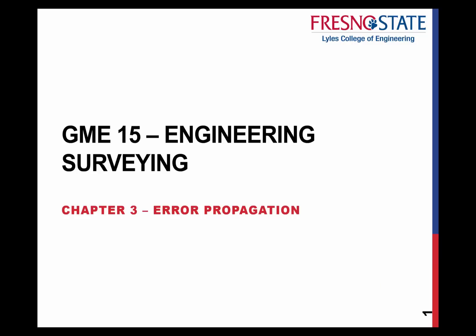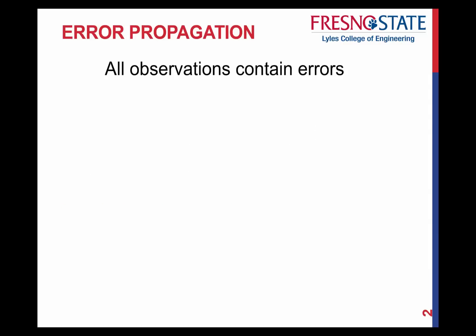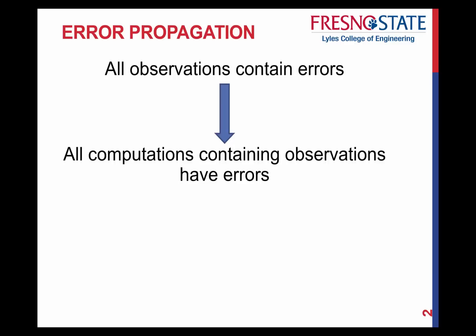So right now we get to talk about error propagation. This is a really fun topic. It's a way that we're going to be able to discuss how much real error there is in any observations that we have, any group of observations or whatever it may be. So as we talked earlier, all observations contain errors, which means every computation containing those observations also has errors.